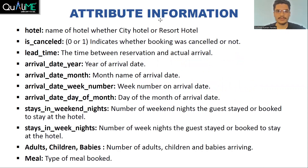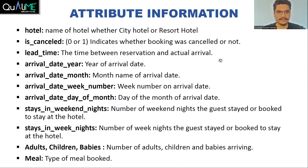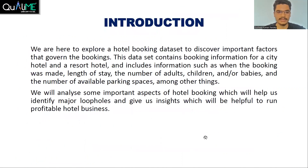Most of the column names are self-explanatory but let's have a quick look at all of them. Hotel contains the name of hotel. Is cancelled contains 0 or 1 indicating whether the booking was cancelled or not — it's a kind of boolean variable. Lead time is the time between reservation date and actual arrival date. Arrival date year, month, week number, and day of the month. Stays in weekend nights and stays in weeknights are in numbers, representing the number of weekend nights and weeknights stayed by the guest.